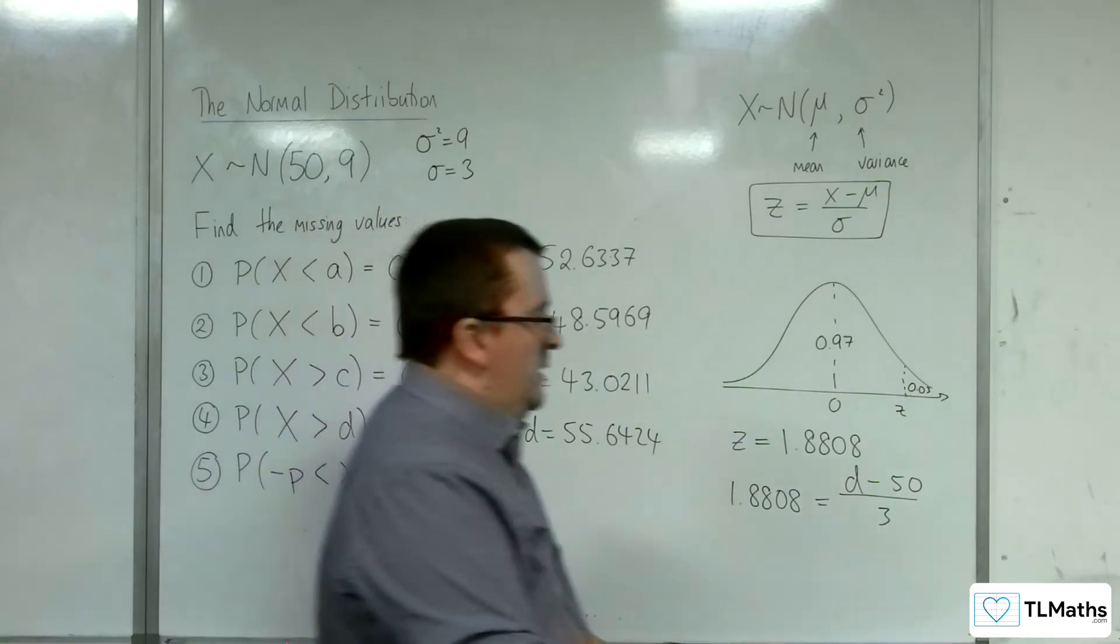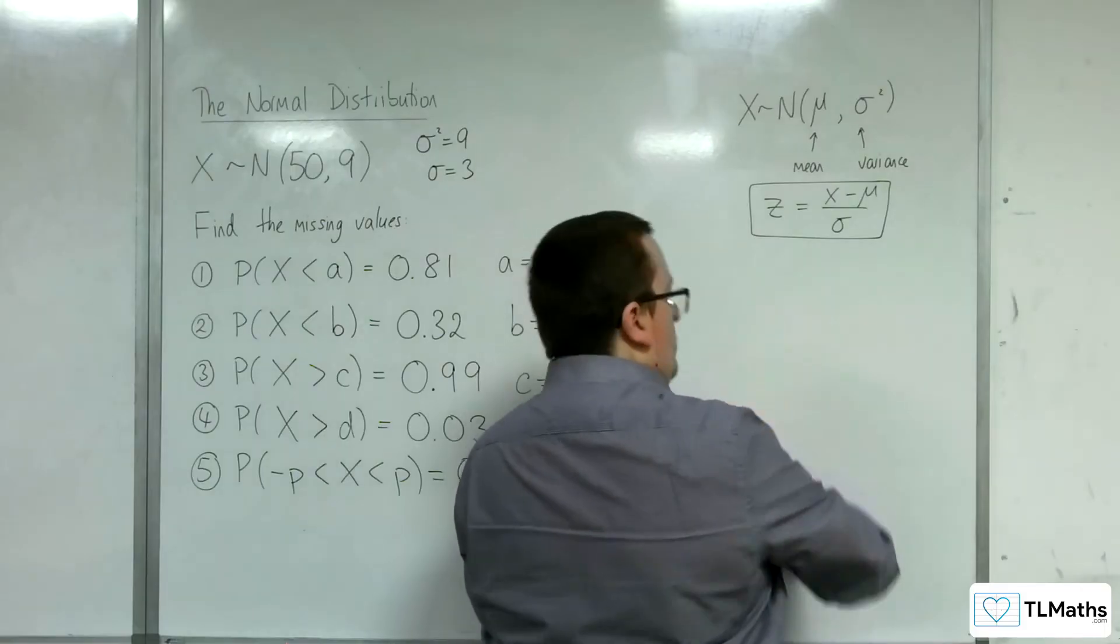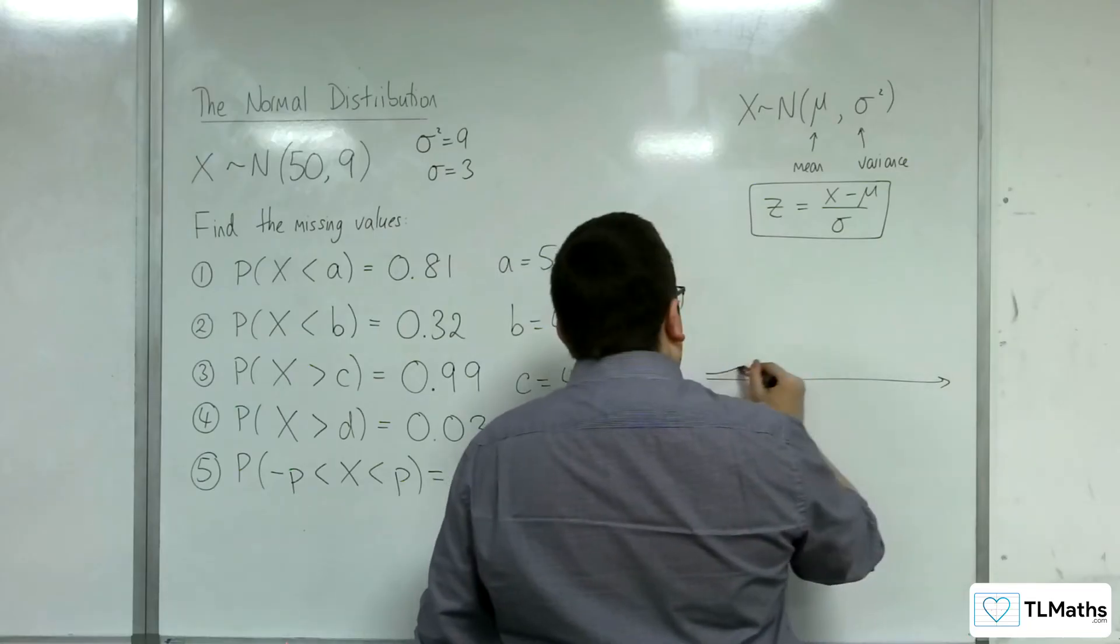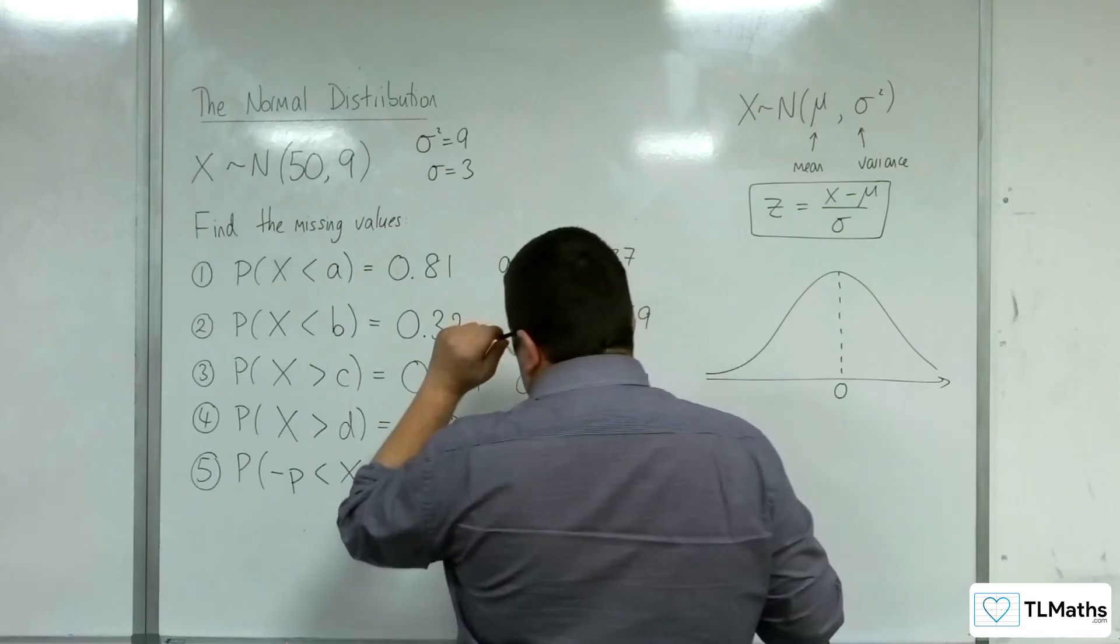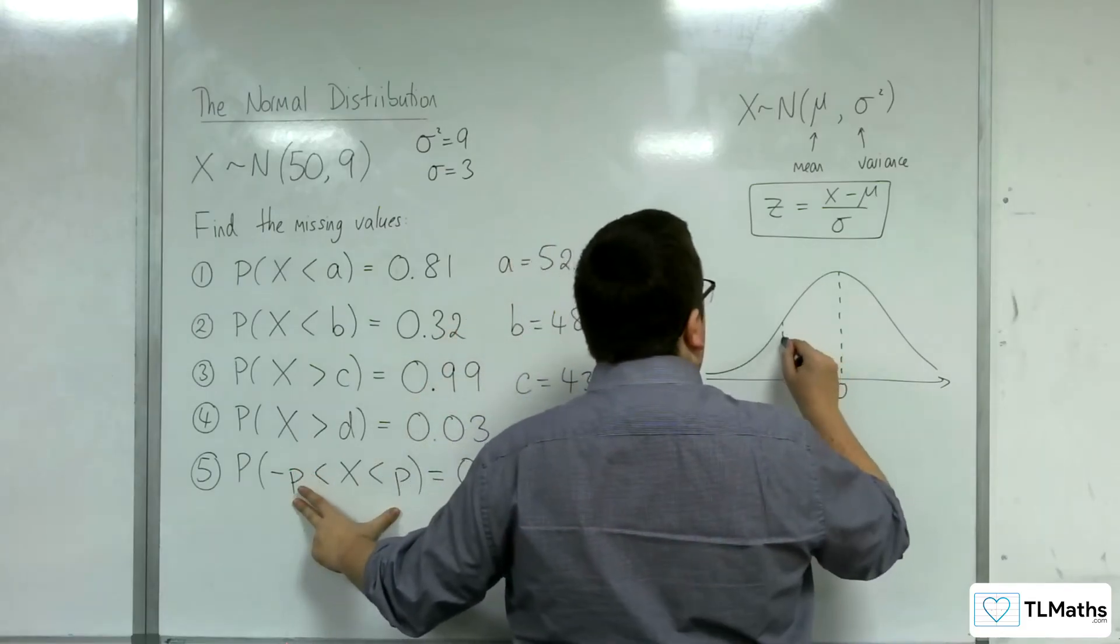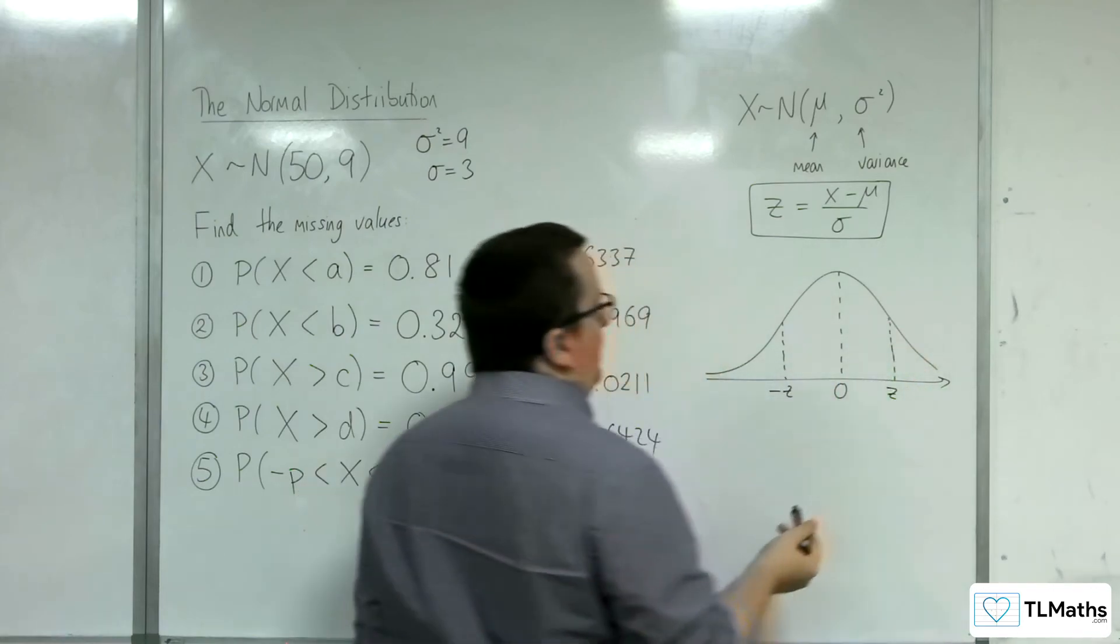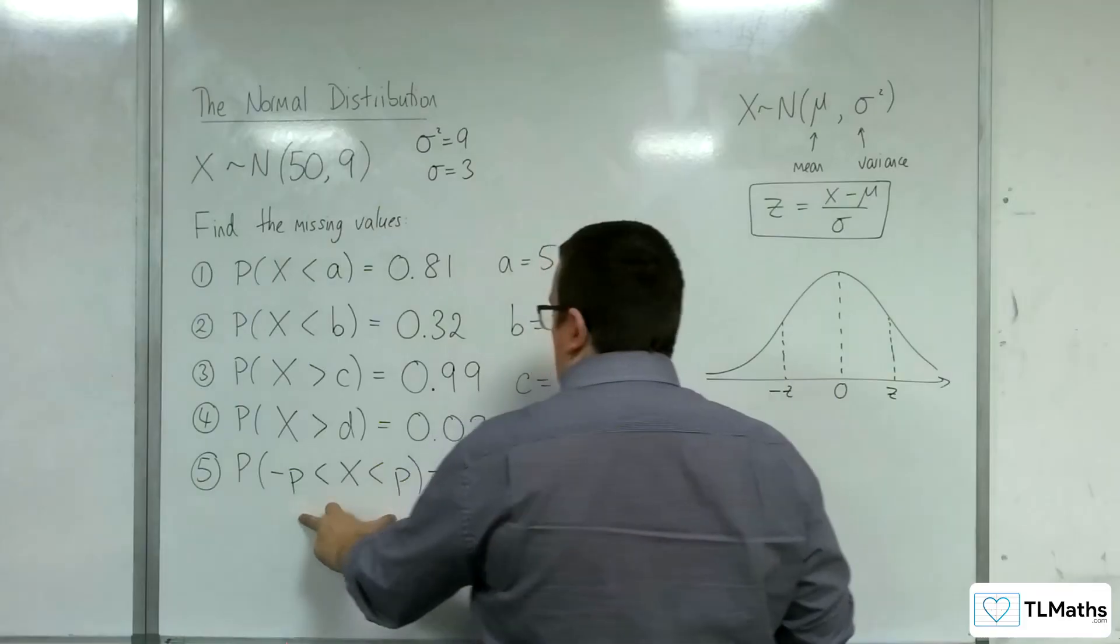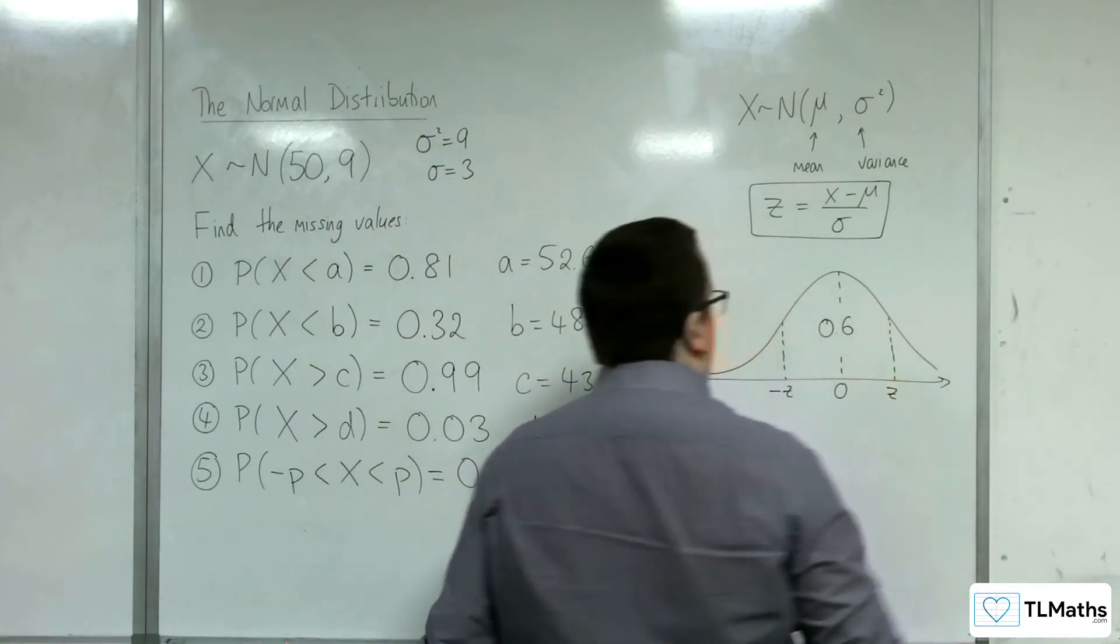Last one. Now the last one, I haven't gone through any examples of doing this in the previous few videos. The idea is that there are these two values that are equidistant from 0. I'm using z here because I'm using the standard normal. So that the probability in between is 0.6.